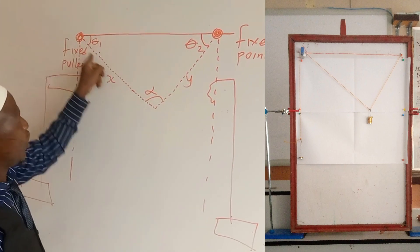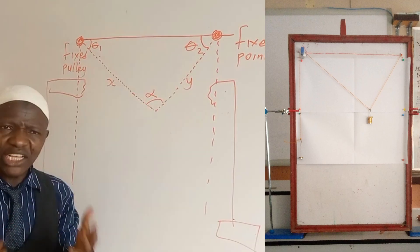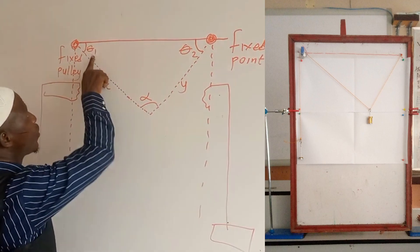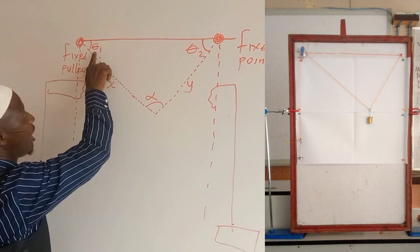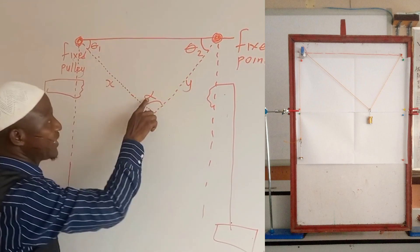Then after suspending, it will look like this. So they may now ask us to measure the angle here and this one. Like here I have theta 1, theta 2. Then this is alpha.